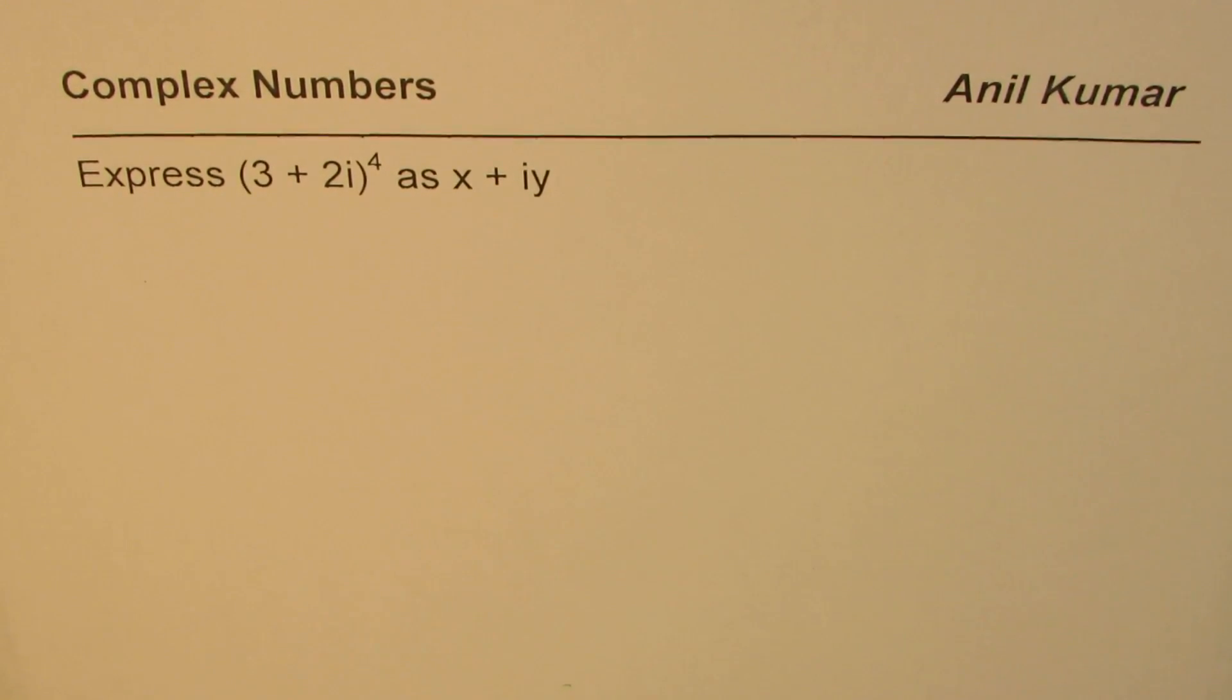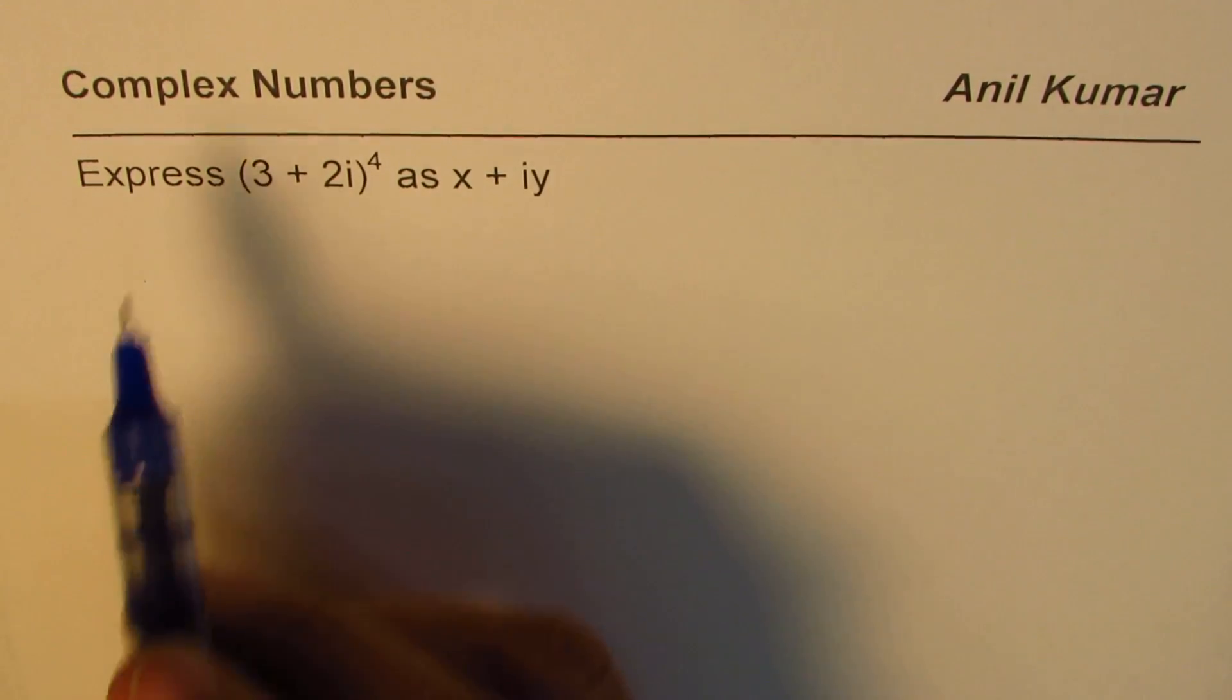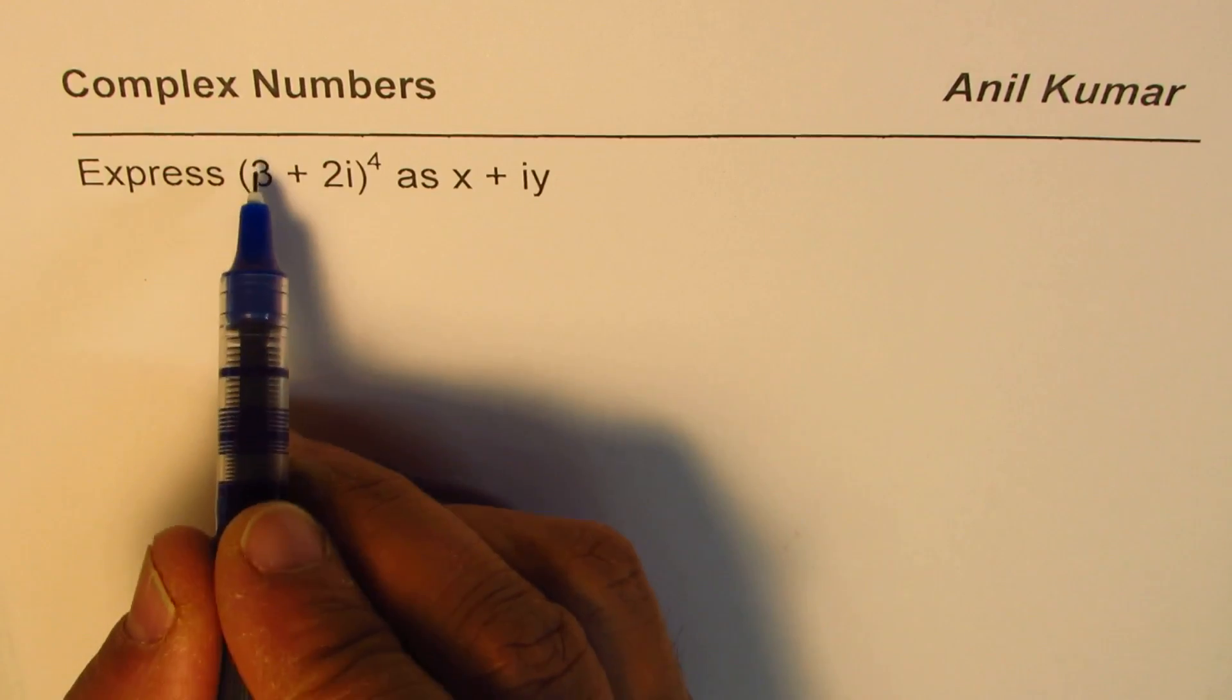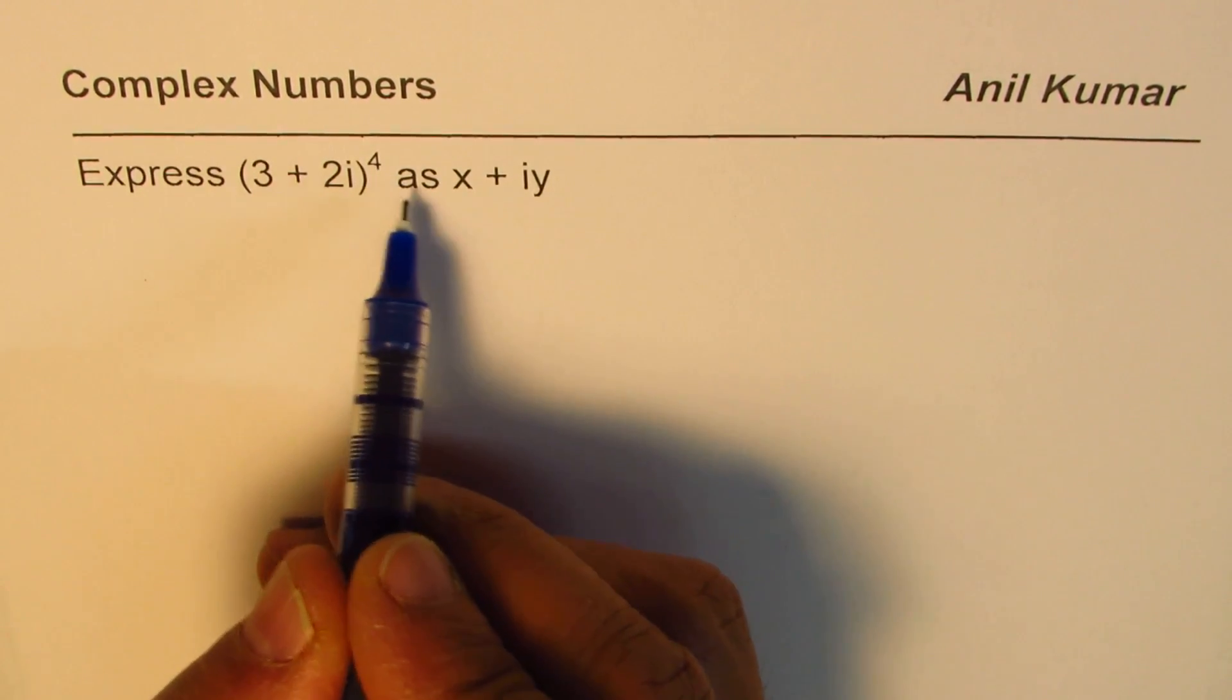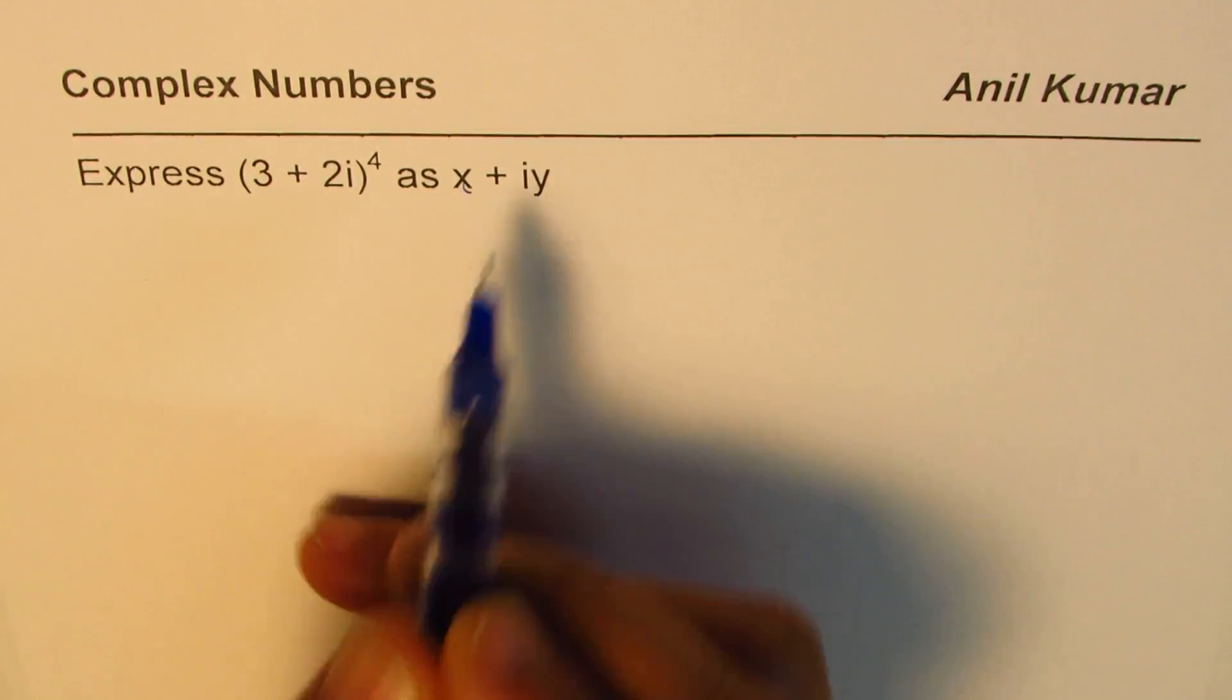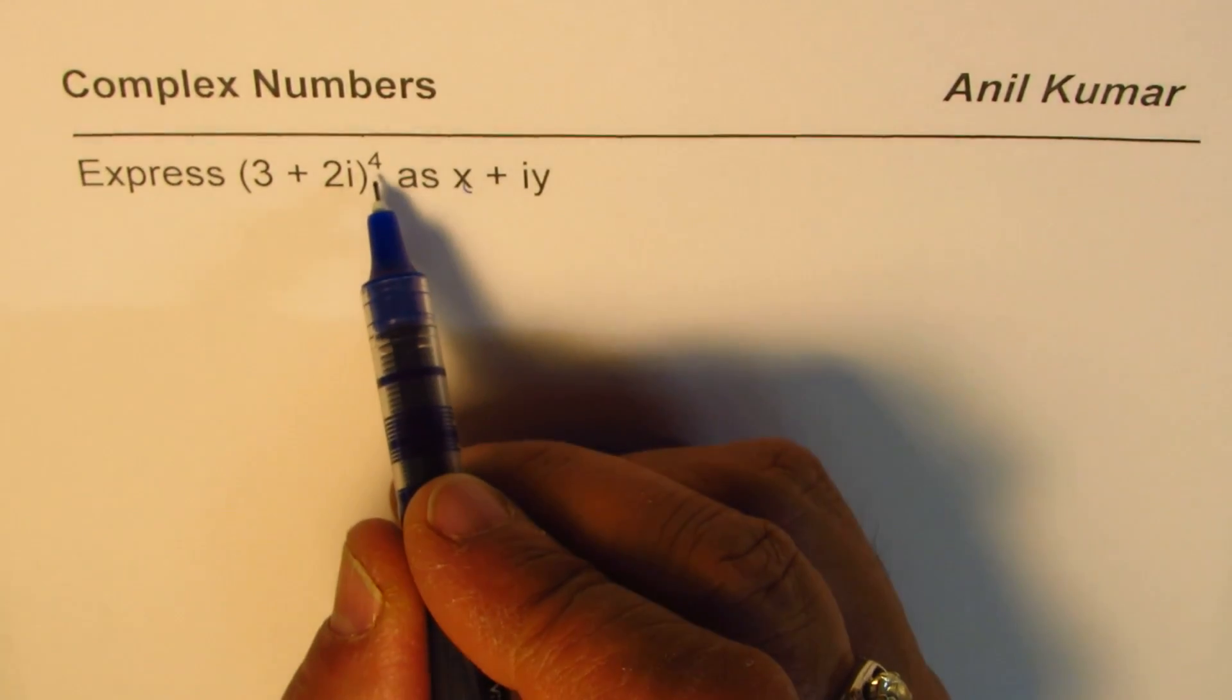I'm Anil Kumar and in this video we will learn how to expand expressions with complex numbers. The question is: express 3 plus 2i to the power of 4 as x plus iy. Now whenever we have binomial powers we could always use Pascal's triangle or combination.